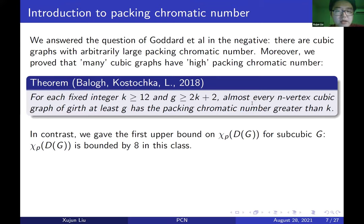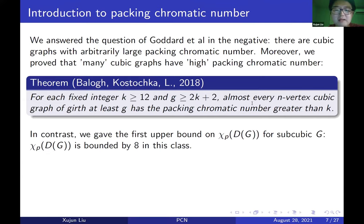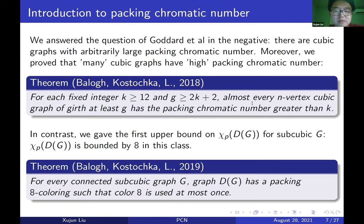We showed more — that many cubic graphs have high packing chromatic number using a probabilistic argument. Specifically, for each fixed integer k ≥ 12 and girth g ≥ 2k+2, almost every n-vertex cubic graph of girth at least g has packing chromatic number greater than k. In contrast, for the subdivision problem, we gave the first upper bound of 8 on Chi_P of DG for subcubic G.